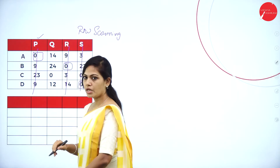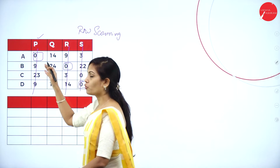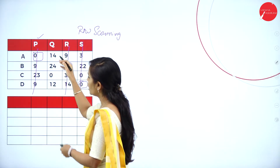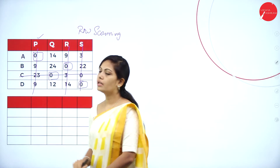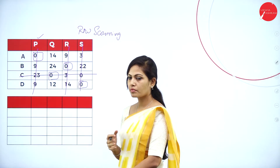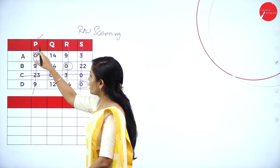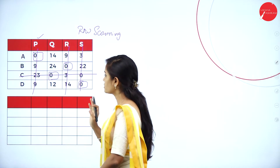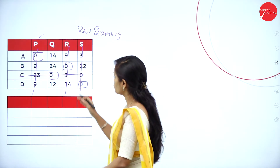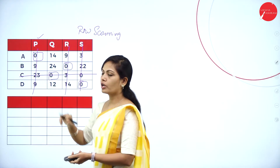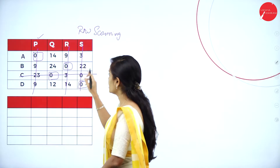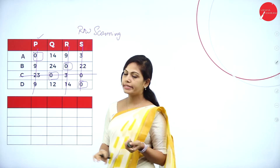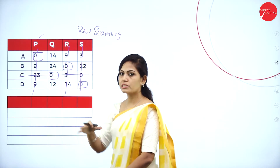Next step is column scanning. In the first column, all values are deleted, so go to the second column. The second column has only one zero — assign it and put a horizontal line. For column scanning, put a horizontal line; for row scanning, put a vertical line — please don't get confused. The third and fourth columns have no remaining zeros; all values are deleted.